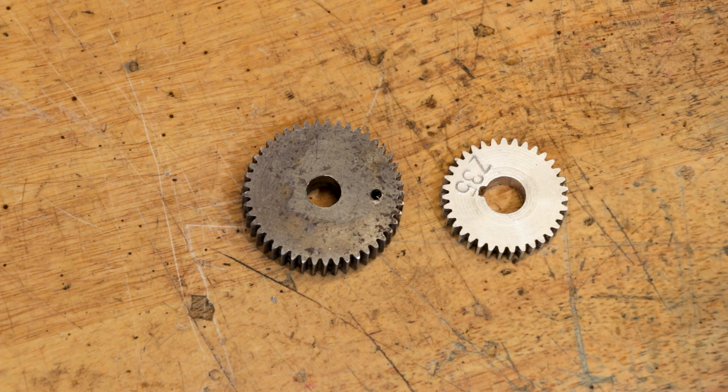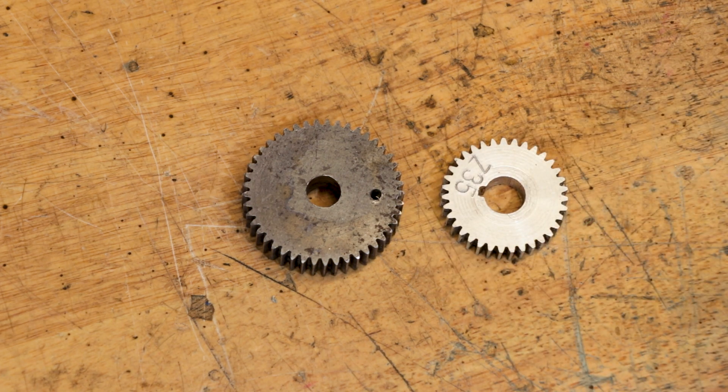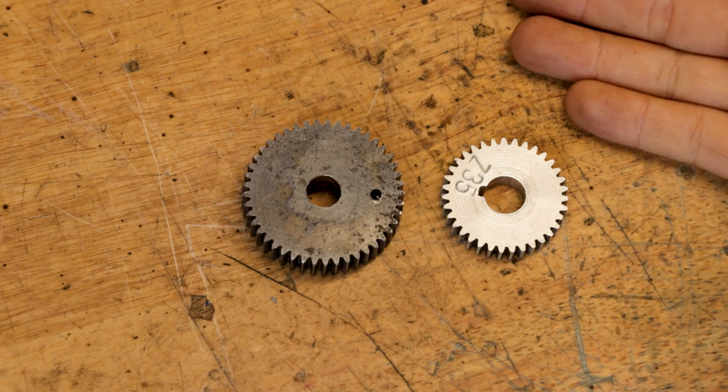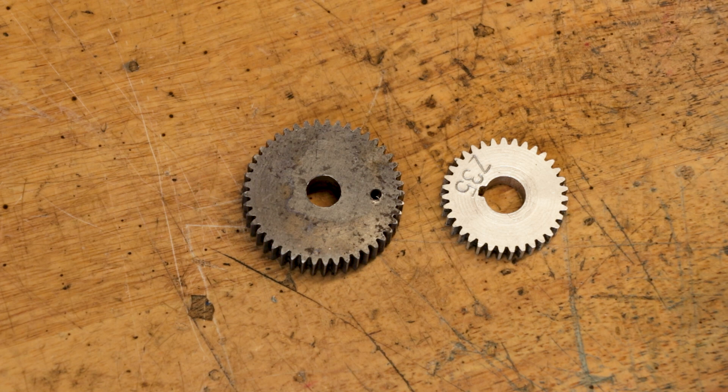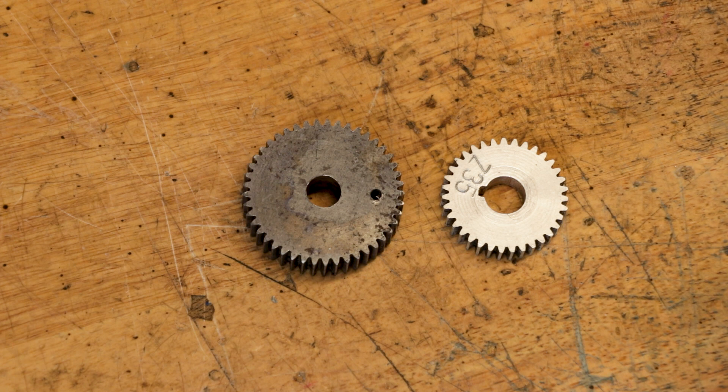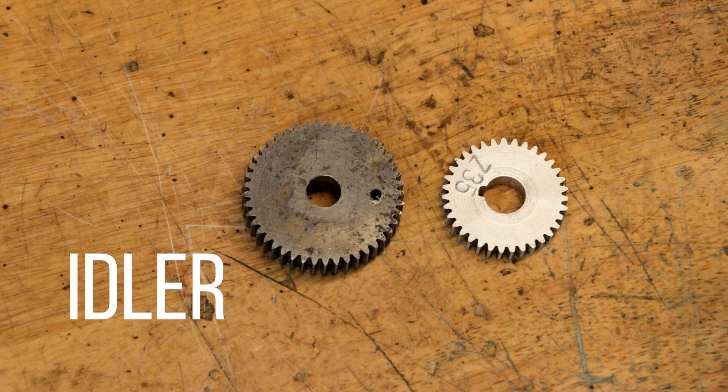So let's start off with something relatively easy. What we have here are two identical gears, identical in every single way possible except for the material, the number of teeth, the bore size, and the thickness. So yeah, two completely different gears. The biggest difference though is the one on the left is an idler gear whilst the one on the right is a keyed gear.